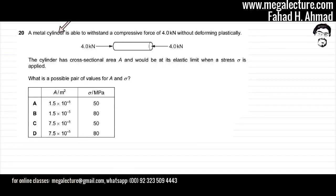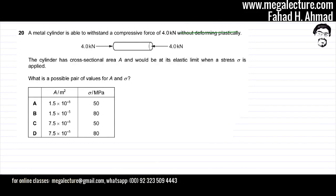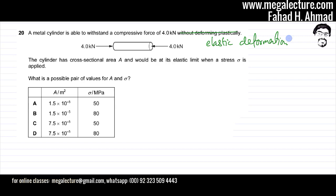The question states that a metal cylinder is able to withstand a compressive force of 4 kilonewtons without deforming plastically. This means it undergoes elastic deformation, so it is going to obey the rules of elastic deformation.